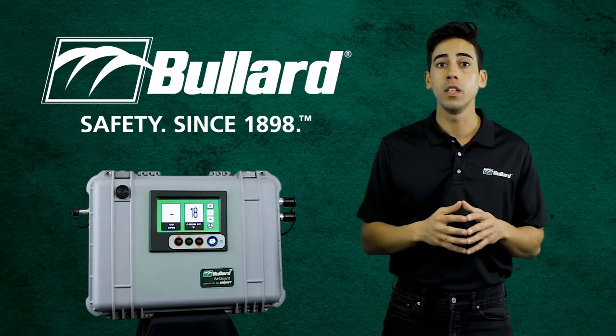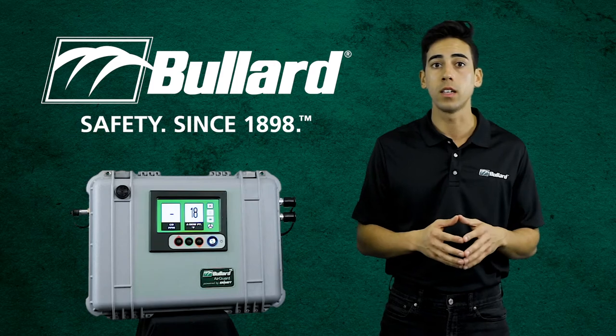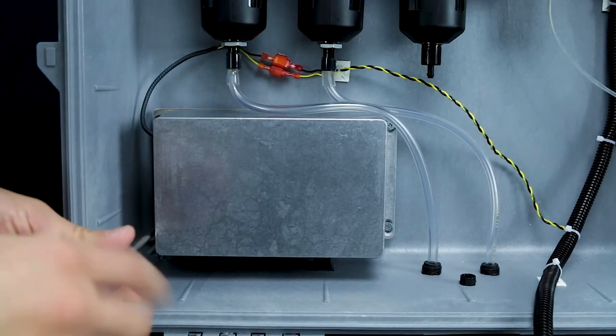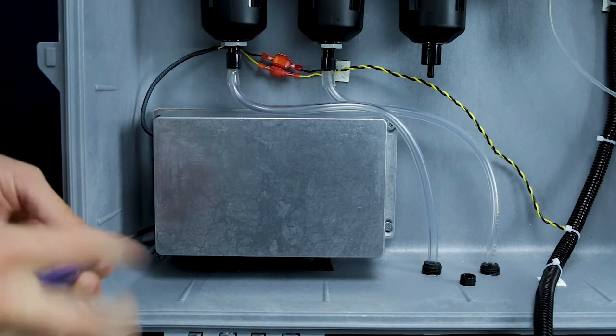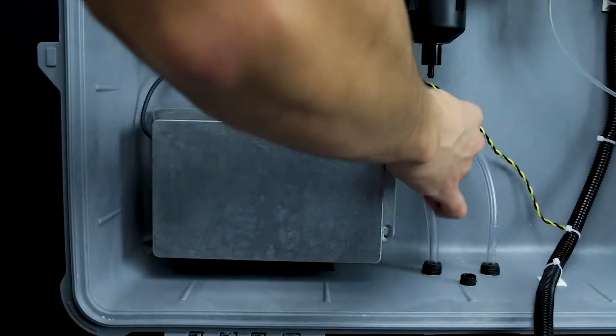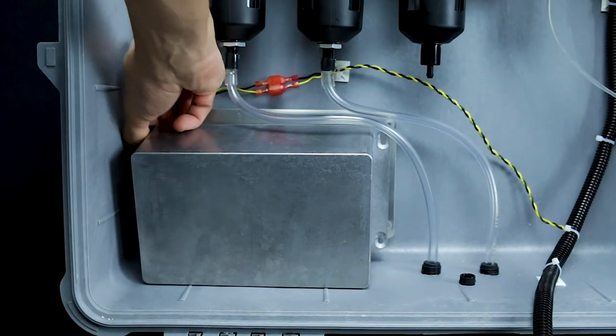The 15 and 30 CFM units allow direct access to the filter bowls. For the 50 and 100 CFM units, the battery assembly must be removed from the mounting plate. Remove the four screws which hold the battery in position.